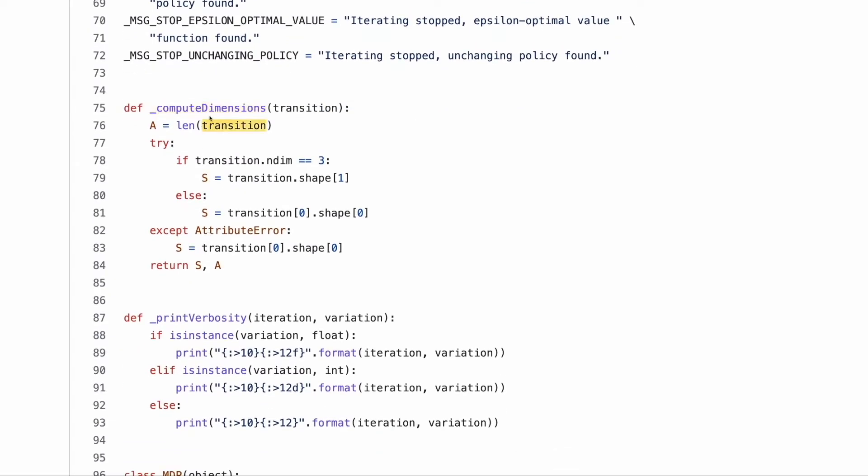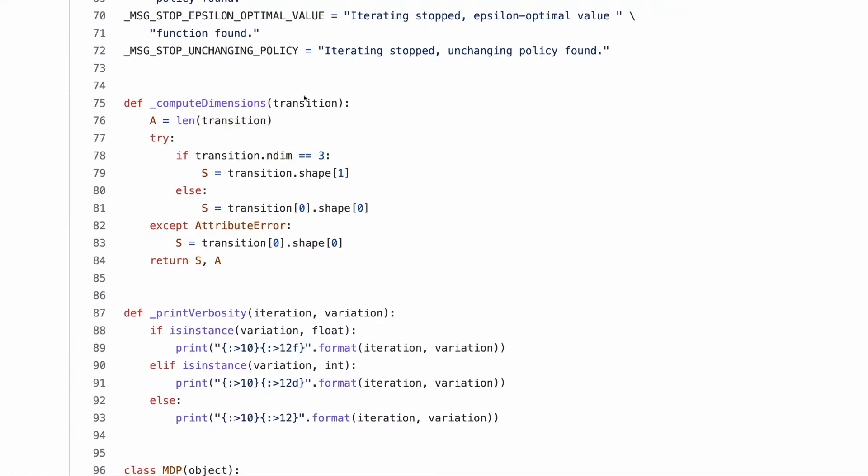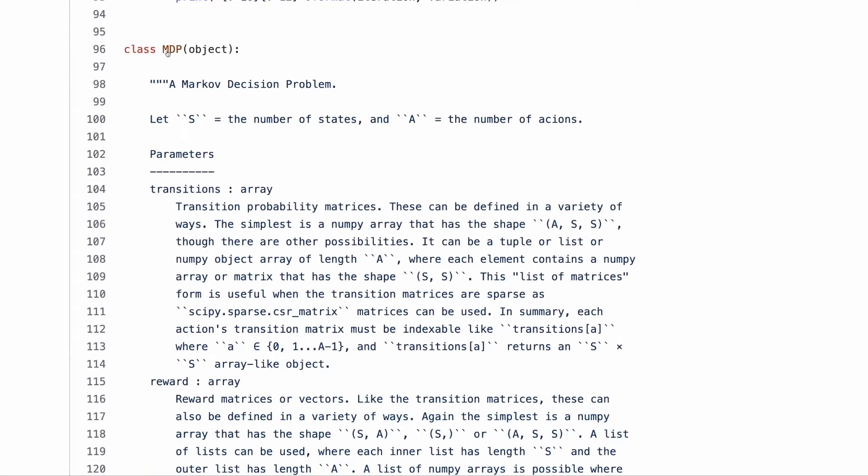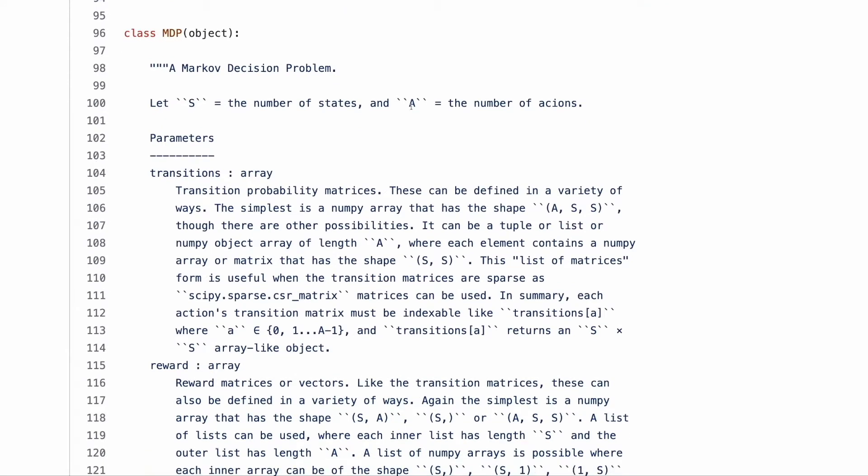Here, utility function, we just compute the dimension, the shapes for states and action based on a transition function. Here is the class of MDP itself. S is a set of states. A is a set of actions.